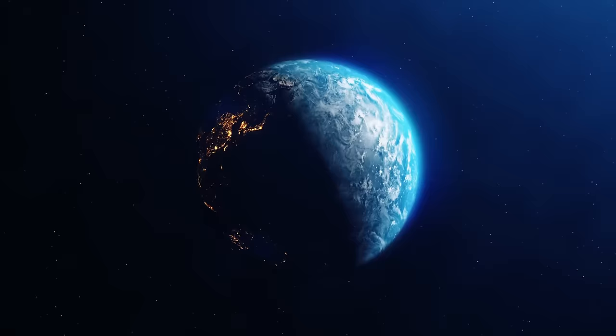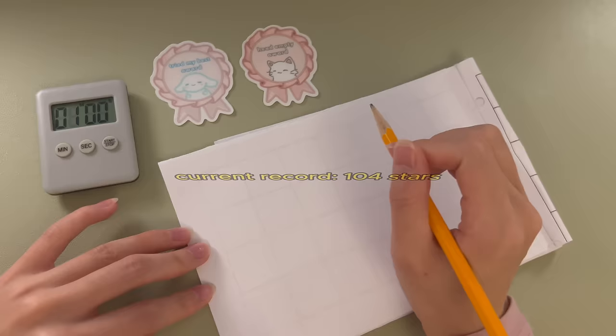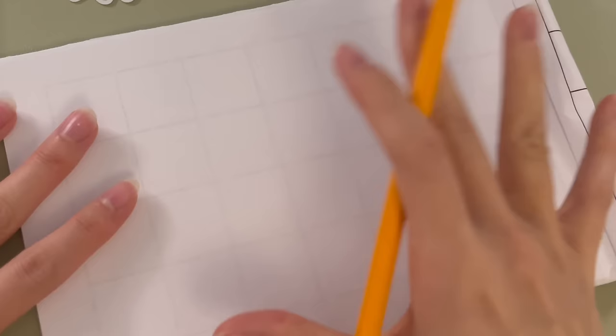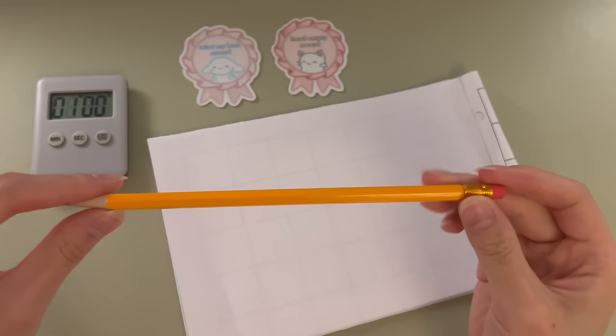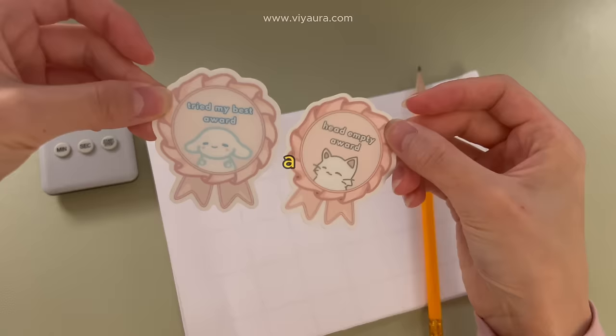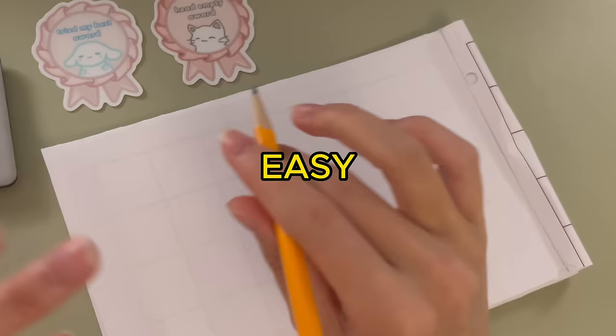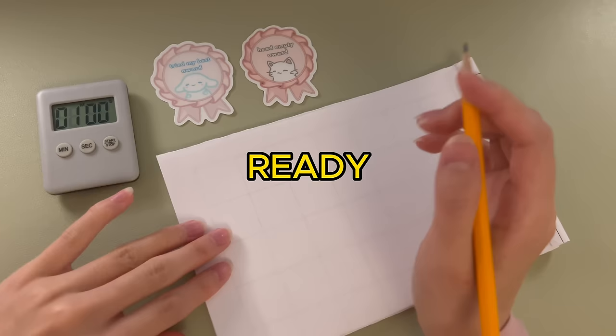The first world record we're gonna challenge is most stars drawn in one minute. The number to beat is 104 stars in one minute. I think we can do it. By the way, here is the world record desk setup. We got our trusty notepad, a nice dollar store pencil, a timer, and my two delusional yet motivational stickers for moral support. Easy. Let's do it.